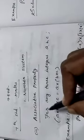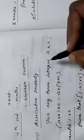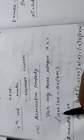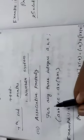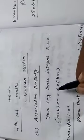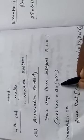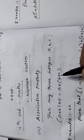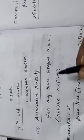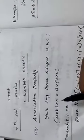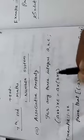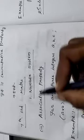Once again: for any three integers a, b, c — a into (b into c) equal to (a into b) into c. These two sides are also equal. So this property is known as associative property.